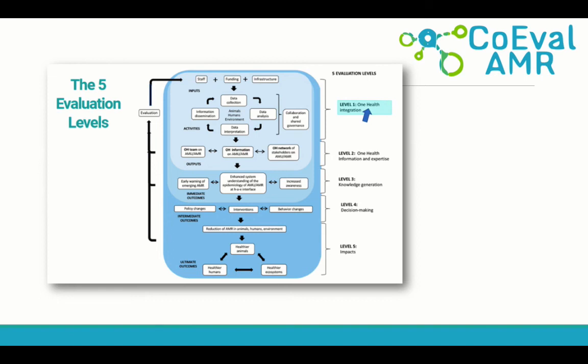So if you go to the online guidance and you click on Level 1 in the figure presented on the website, you will discover that two tools are particularly interesting to consider if you want to evaluate these aspects of your surveillance system, which are the tools developed by the NEO, or the Network for One Health Evaluation, and the ECOSUR tool, a tool which focuses on the evaluation of collaboration in surveillance systems.